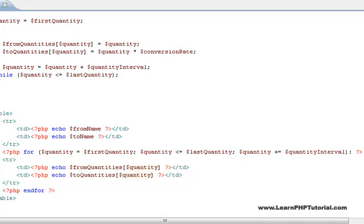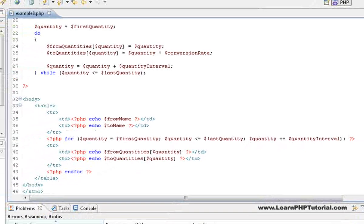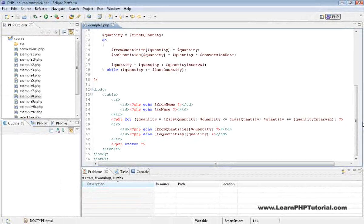Just as in the first loop, quantity is used as the key for each array. So each value that was initialized and calculated in the first loop is now output in a nicely formatted HTML table.